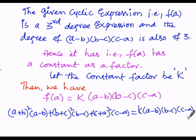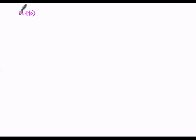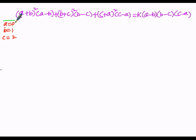In order to find the unknown constant k, we suppose a = 0, b = 1, and c = 2. By replacing these values in the given equation, we can determine the value of k.